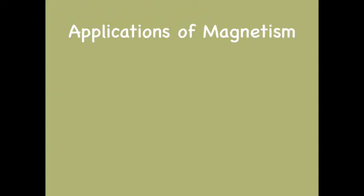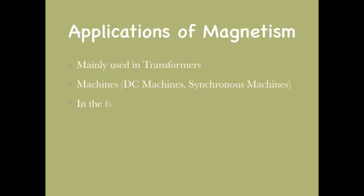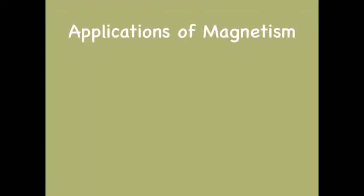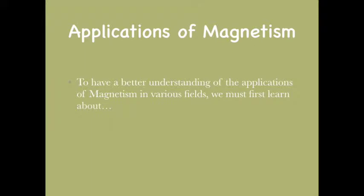Applications of magnetism: this principle is used in transformers and machines like DC machines, synchronous machines, etc. In the field of medicine, it is used in MRI (magnetic resonance imaging), echo scans, and CT scans. To have a better understanding of these applications, we first need to learn about the concept of flux and torque, which are truly physics concepts.